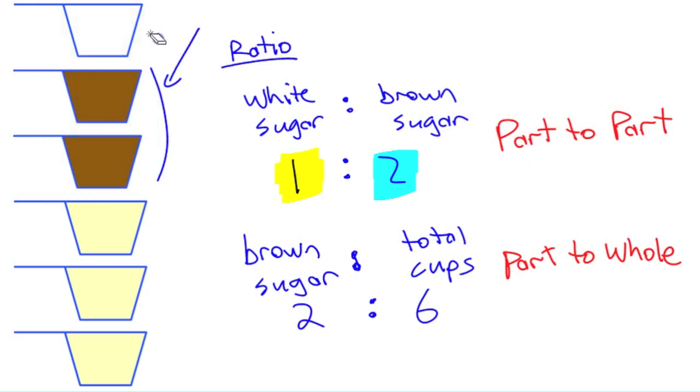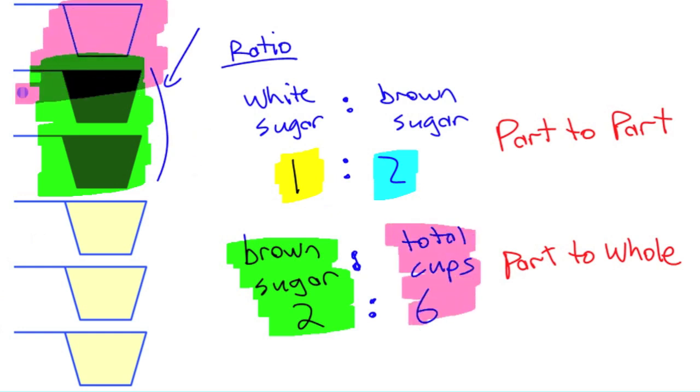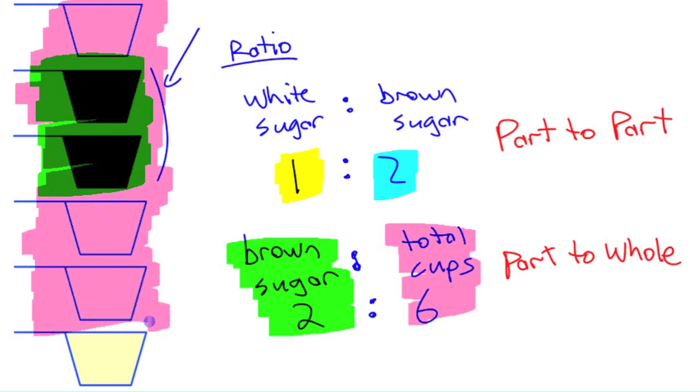Whereas when we write this ratio down here, this is how much brown sugar we have compared to the whole thing here. Total cups, this is the whole thing. You're comparing how much brown sugar there is out of the whole thing. This is why it's called a part to whole ratio. You're comparing the part that's brown sugar to the whole entire collection of cups when we're done. Whereas up here you're comparing one part to another part. It's important to know the difference between those terms.